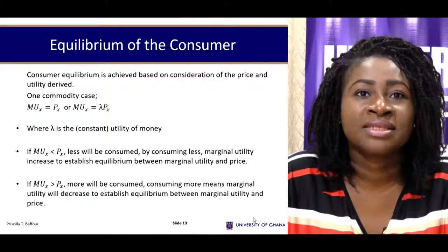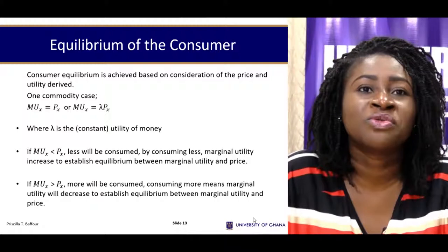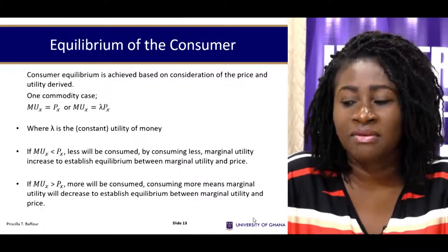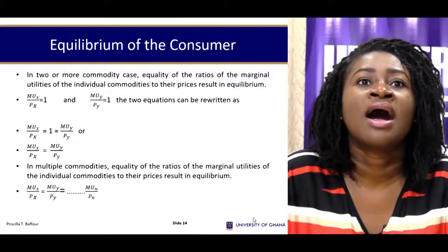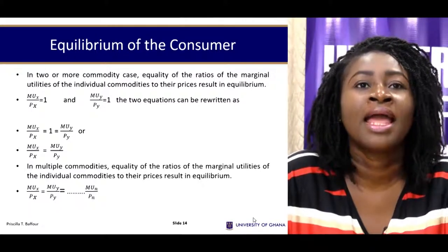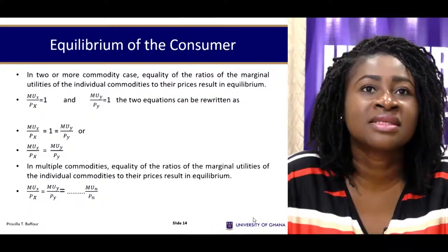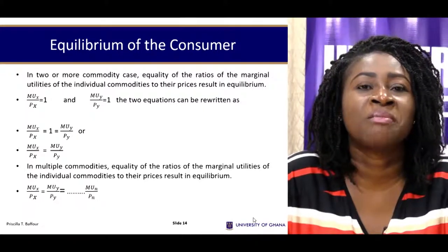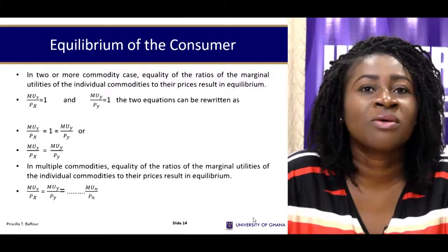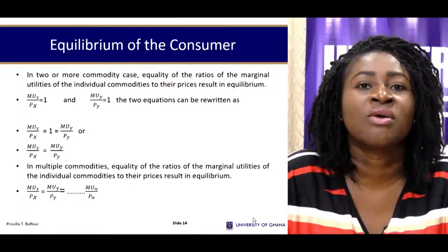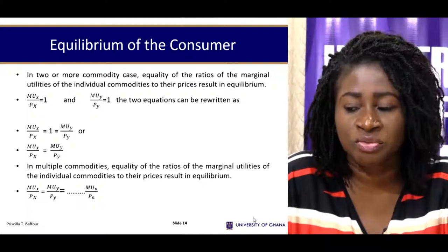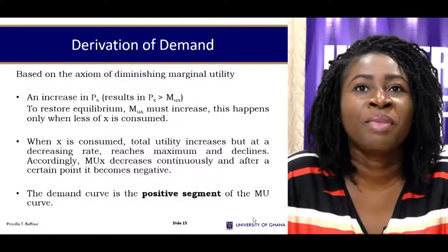When MUx is greater than Px, the consumer will increase consumption of x to decrease marginal utility so that equilibrium is established. In a two-commodity case where the consumer is consuming goods x and y, the ratio of marginal utility to the price of x must be equated to the ratio of marginal utility of good y to the price of good y. In an n-commodity case, this ratio for every commodity must be equated for the consumer to be in equilibrium.